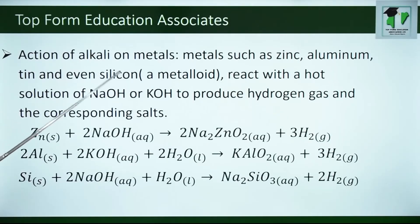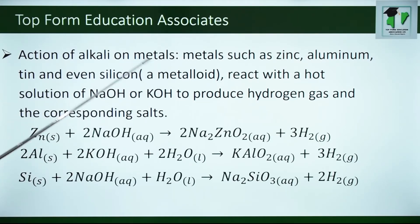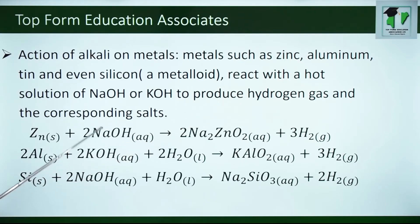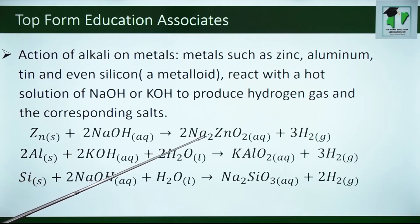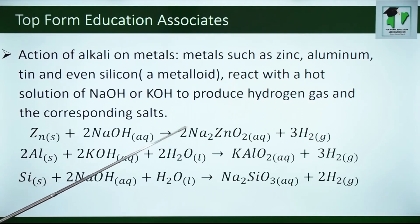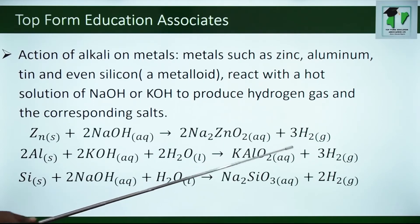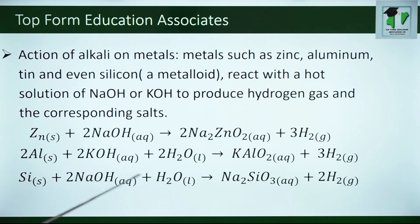Action of alkali on metals. Metals such as zinc, aluminum, tin and even silicon — silicon is a metalloid meaning it has the actions of a metal and non-metal — react with a hot solution of sodium hydroxide or potassium hydroxide to produce hydrogen gas and the corresponding salts. You can see zinc reacting with sodium hydroxide to give the product and hydrogen gas. Aluminium reacting with hot KOH plus water to give us potassium aluminate and hydrogen gas. The same occurs with silicon and sodium hydroxide plus water.